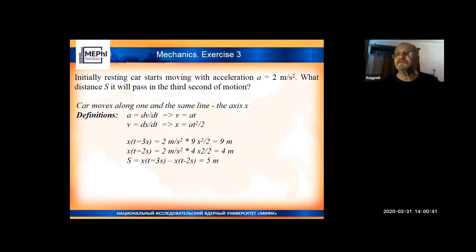We have to write down the definitions. What is acceleration? Acceleration is the derivative from velocity. Acceleration in our case is constant, 2 meters per second squared. It means that velocity must depend on time linearly as acceleration multiplied by time: v = at. Why? Substitute it here. Take the derivative and you will find the derivative is exactly equal to acceleration and is constant, exactly as required.